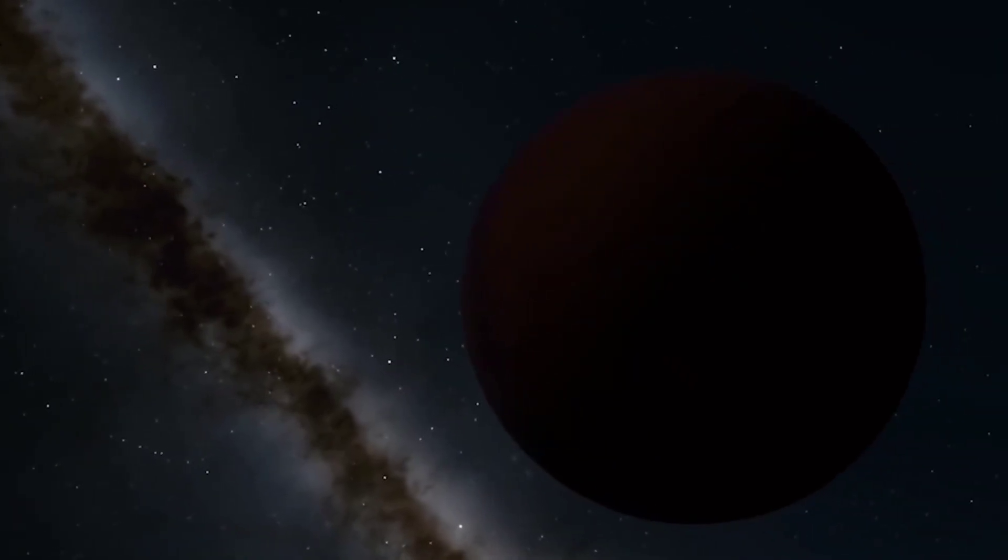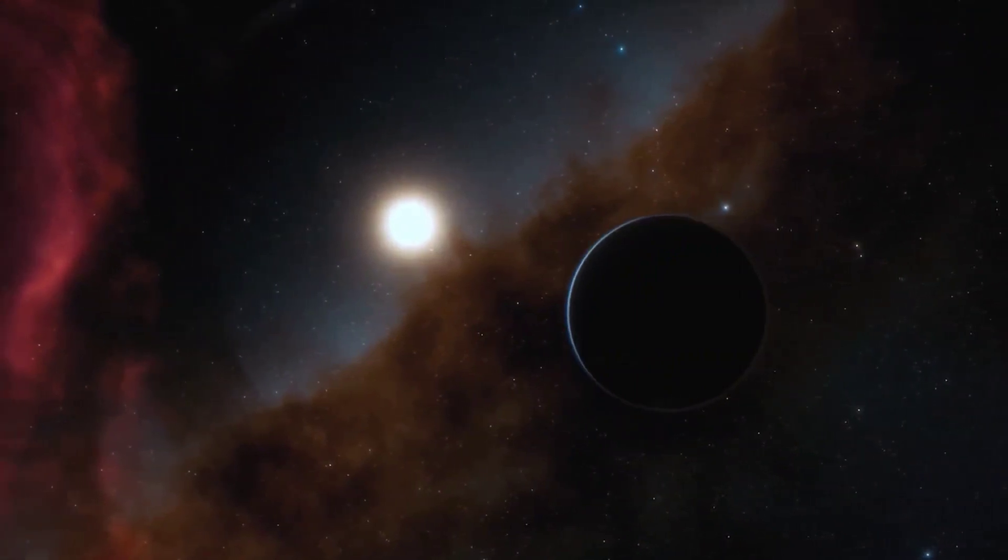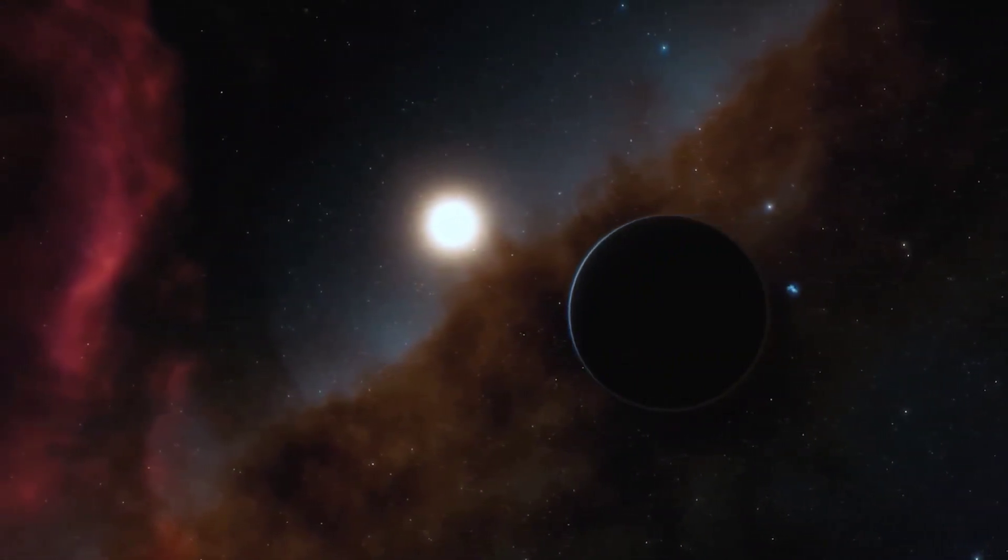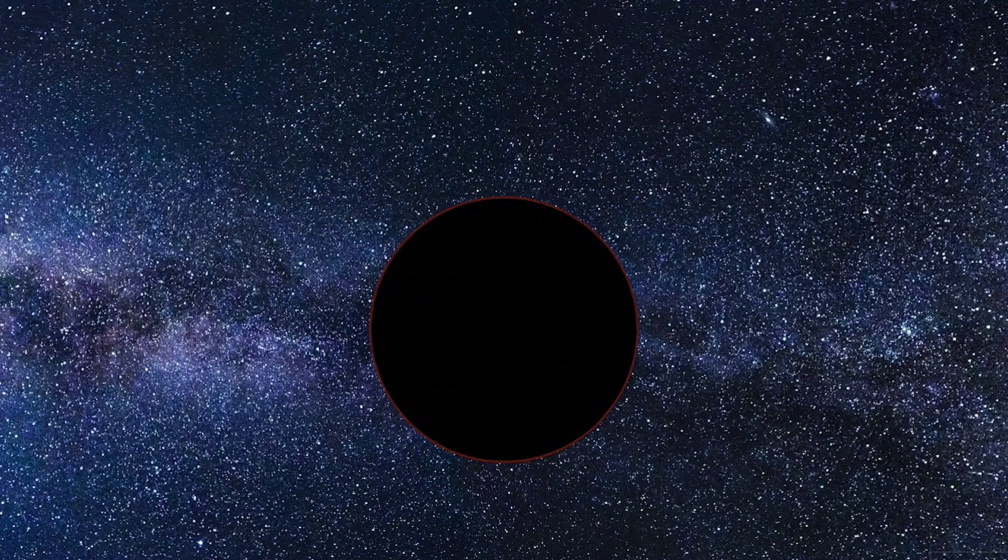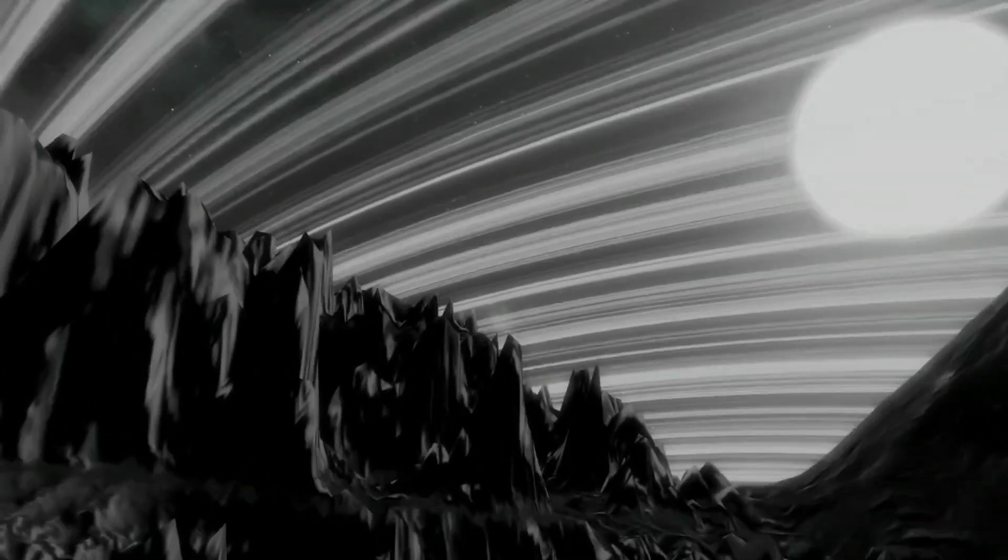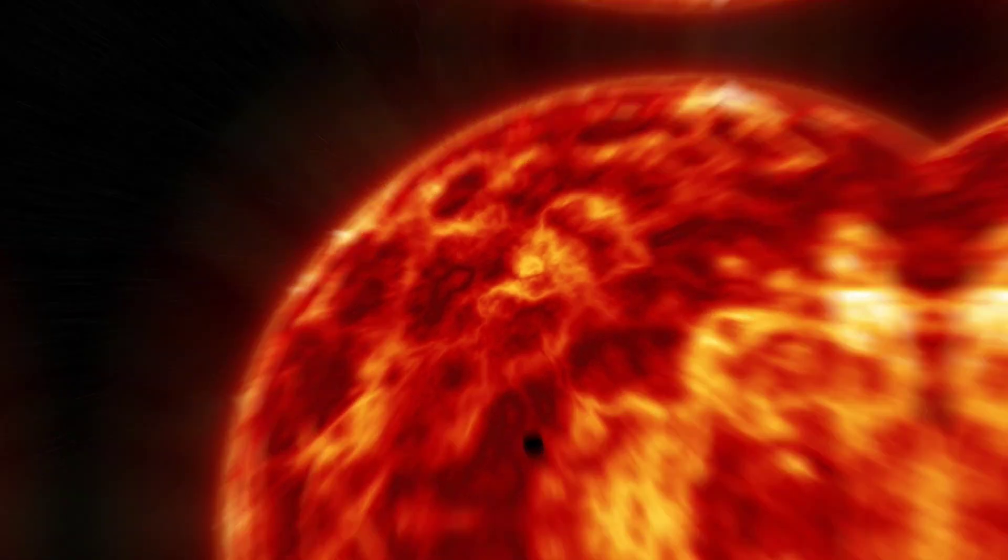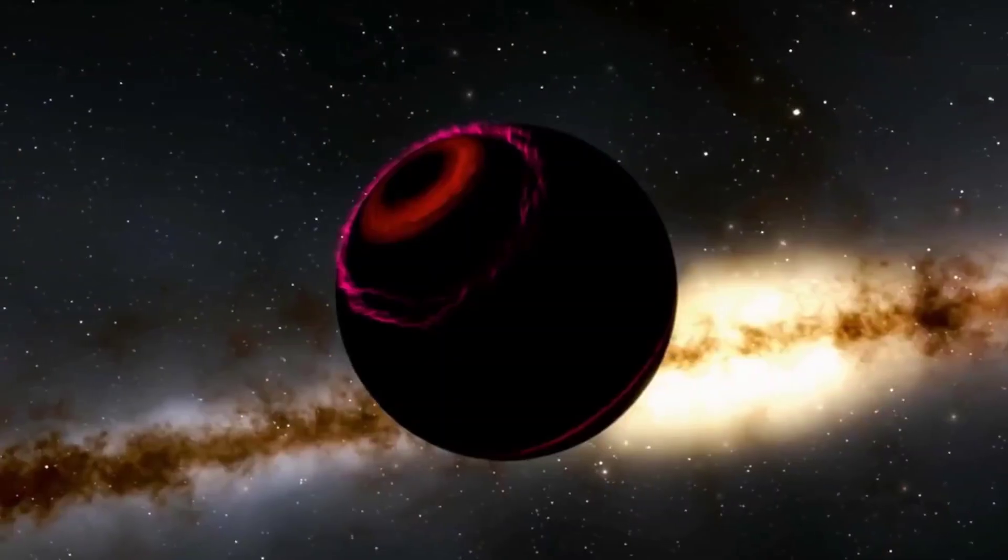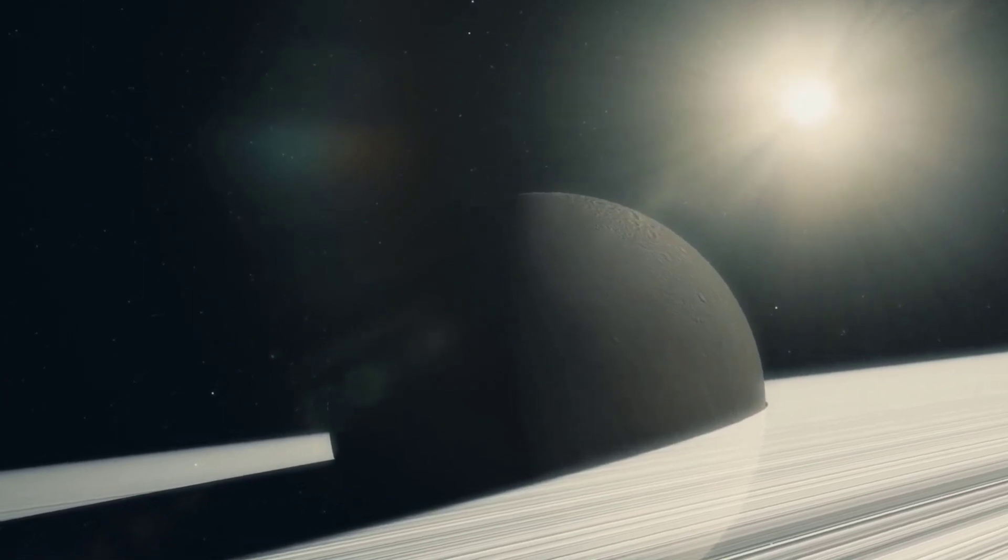Extreme darkness is another prominent feature of TRES-2b. It is darker than coal or black acrylic paint because it reflects less than 1% of the light that strikes it. The atmosphere of the planet, which contains a lot of light-absorbing elements like sodium and potassium, also intensifies this dark color. TRES-2b is an unusual exoplanet because of its extremely high temperature and total darkness. It has a surface that is hotter than some stars and so dark that telescopes will find it difficult to see it.